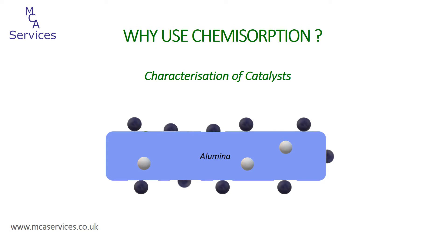Although we can dope to a desired loading onto the support material with very good accuracy, the process of doing so often causes a certain quantity of the active material to become completely inaccessible. This might be due, for example, to migration into the support material, or due to sintering to form larger particles, and so on.